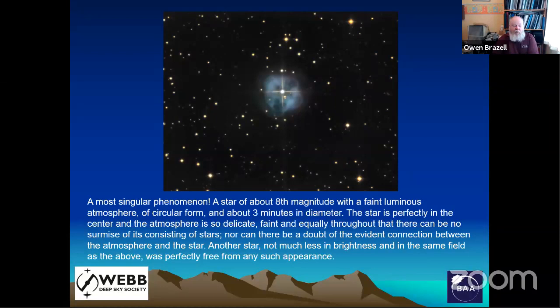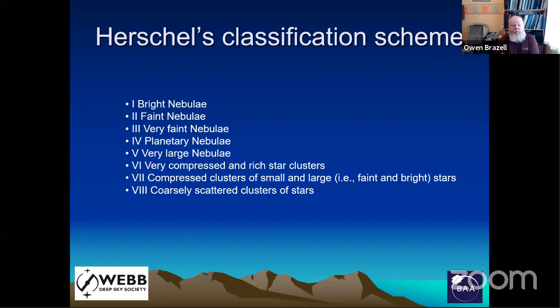Working on from the Herschels, John Herschel also discovered further nebulae and tried to classify things. Astronomy then, as to a certain extent now, was very much in the botany mode — collecting as many objects of different types and trying to break them down. Because Herschel had found a number of objects that looked to him like the planet Uranus, which he'd already discovered, he made a separate classification of planetary nebulae. Not all the objects in this class were what we'd now call planetary nebulae, but a number were, and the name has stuck.